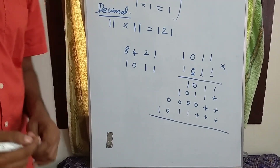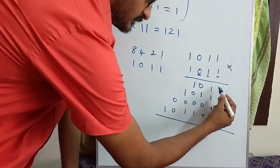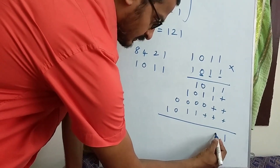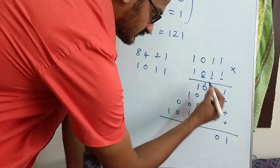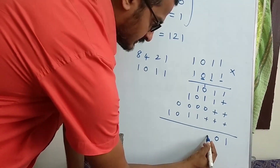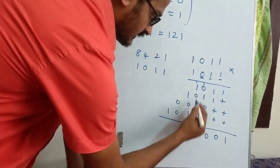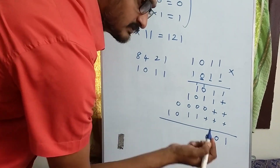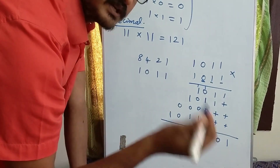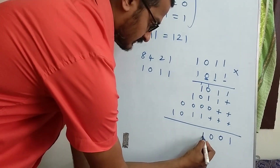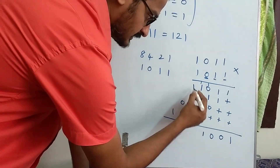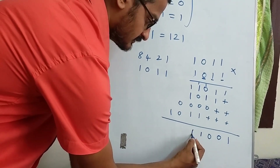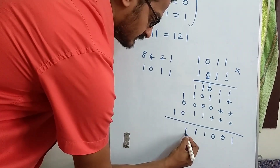Repeated addition is multiplication. So now we will add. First: 1 plus 1 is 10, so that is 0 carry 1. We add 1. So 1 plus 1 is 10. Then 1 plus 1 plus 1: three 1s — 1 plus 1 is 10, then 10 plus 1 is 11. So 1 above, carry 1. Again 1 plus 1 is 10, then 10 plus 1 is 11. So 1 1.